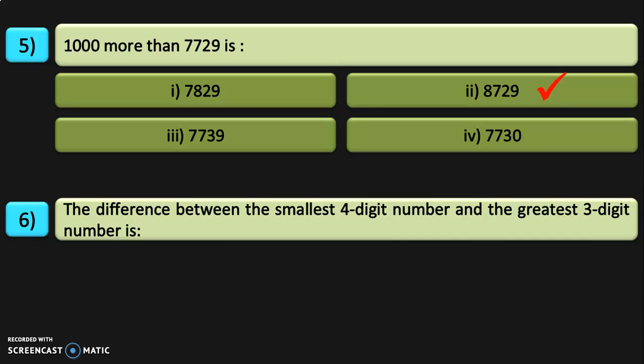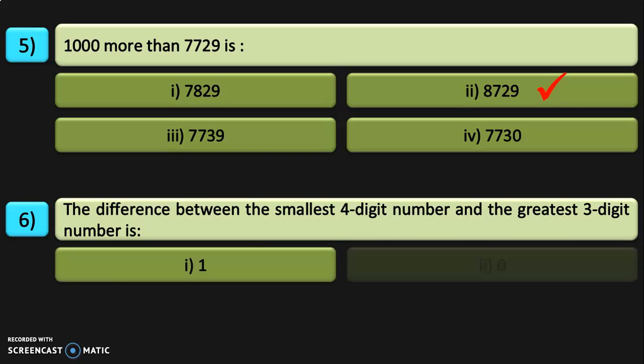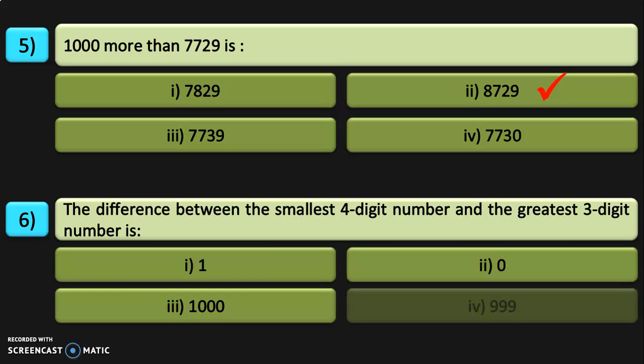The difference between the smallest 4-digit number and the greatest 3-digit number is 1, because the smallest 4-digit number is 1,000 and the greatest 3-digit number is 999. The difference between these two gives you the answer 1.